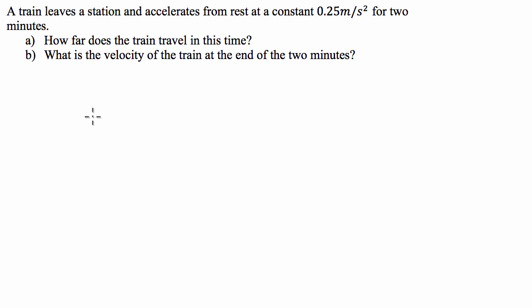Hi guys, we've got an Applications of Calculus question today which states that I've got a train leaving a station accelerating from rest at a constant 0.25 meters per second squared for two minutes. How far does the train travel in this time and what is the velocity of the train at the end of the two minutes?